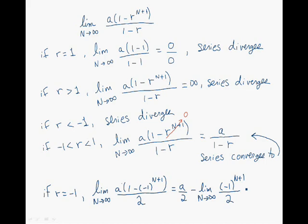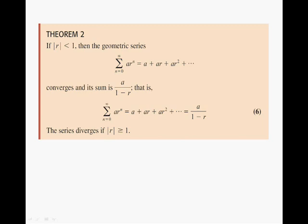All of these results are summarized by the following theorem. When the absolute value of R is less than 1, the geometric series converges, and it converges to A over 1 minus R. When the absolute value of R is greater than or equal to 1, the geometric series diverges.